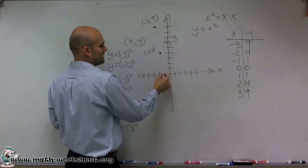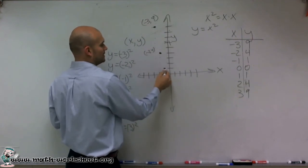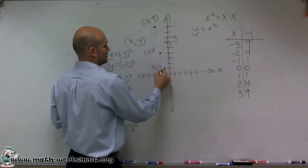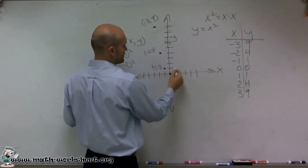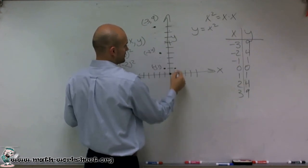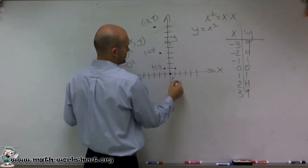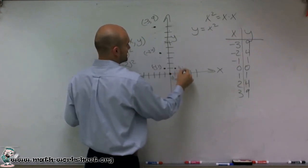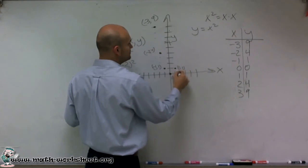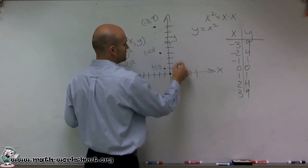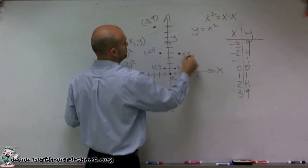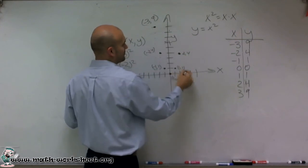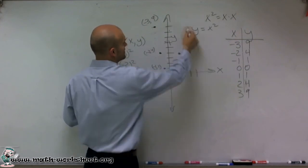Then I have negative 1, up 1. Then we have 0, 0. Then 1 comma 1, 2 comma 4, and 3 comma 9.